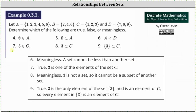Number seven, three is an element of C. C contains the elements one, two, and three. Three is an element in C and therefore number seven is true.